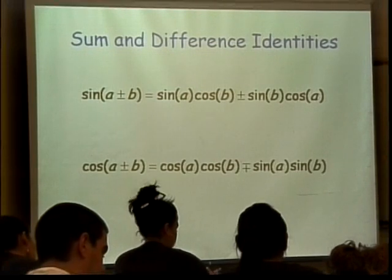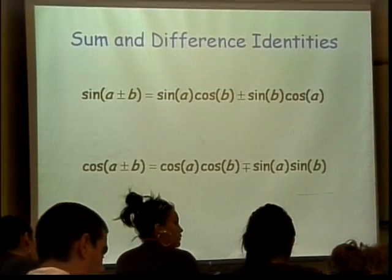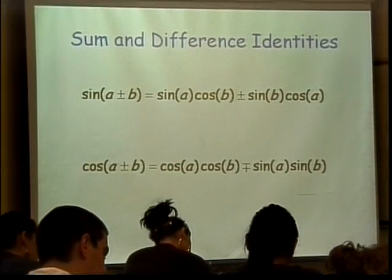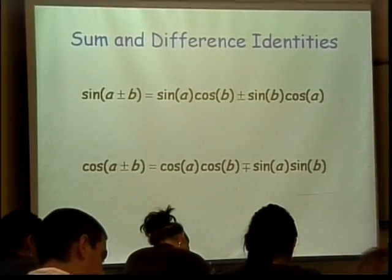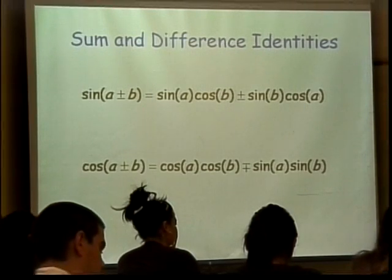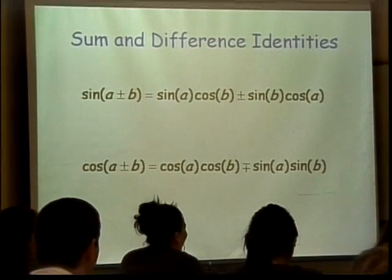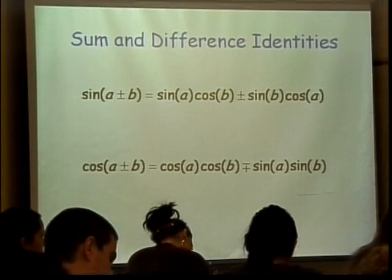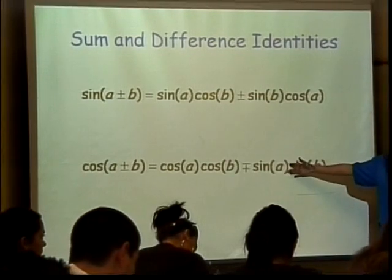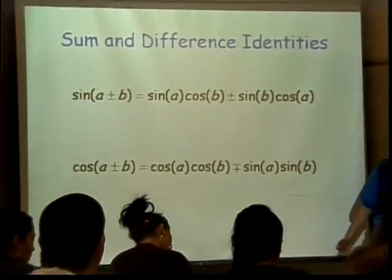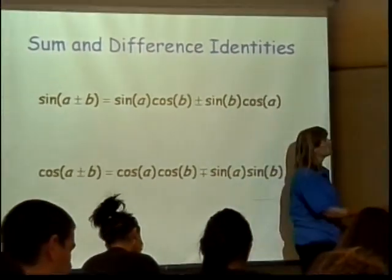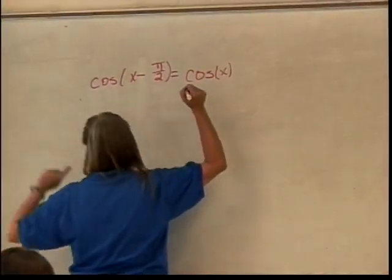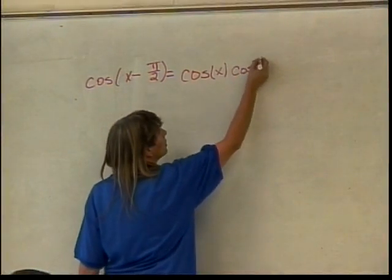Second formula this time. So I'm going to be using this one. Where do I start? Well, what does this tell me to start with? Cosine of the first angle. So I have the cosine of what is my first angle? X. And then I multiply times the cosine of the second angle. So what's the second angle? Pi over 2.